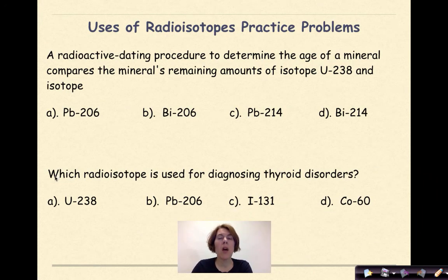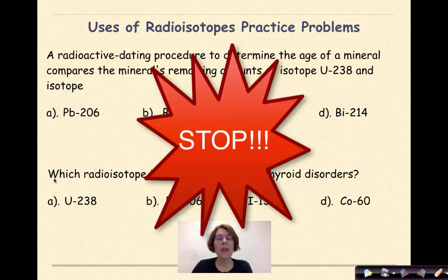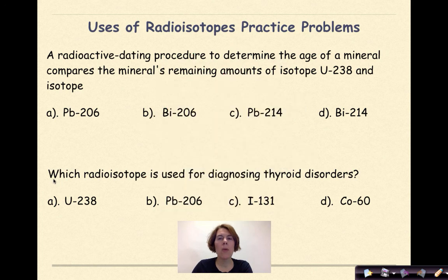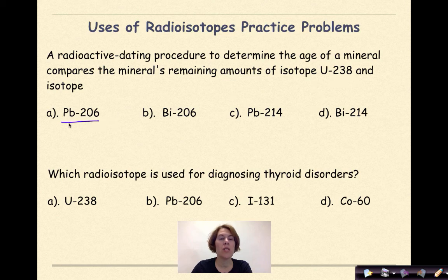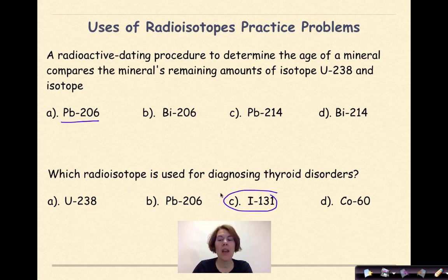More practice problems. Pause the video, read and answer the problems, and then check your work. A radioactive dating procedure to determine the age of a mineral compares the mineral's remaining amount of isotope uranium-238 to lead-206, because uranium-238 will decompose to this more stable form. Which radioisotope is used for the diagnosis of thyroid disorders? The correct answer is iodine-131. Uranium-238 has an extremely long half-life, which we don't want, and cobalt-60 is used more in treating cancerous tumors.